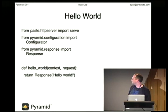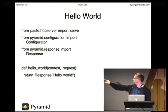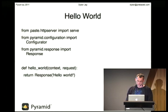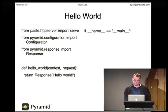Anyone who uses Django would be familiar with the idea of a view callable — a view, a function that returns a response. That's pretty much what we have here. We're taking the request — you just need the request — and returning 'hello world'.